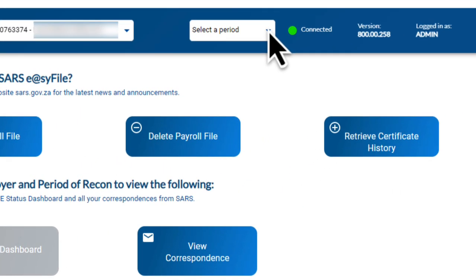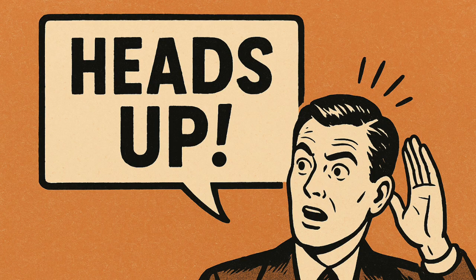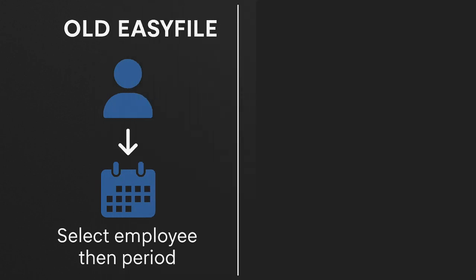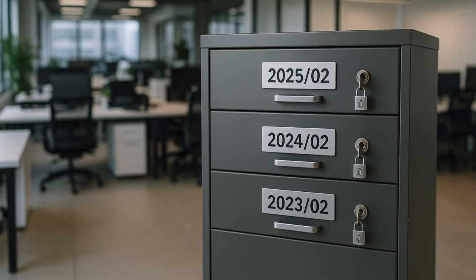At the top, in the middle of the screen, you'll see the option to select the period. Just a heads up: in the old EasyFile you'd first select the employee and then choose the period, but in the new EasyFile version 8 it works the other way around. You first select the period and then view the employees within that specific period. Each period works independently now, and that's a major shift to understand.